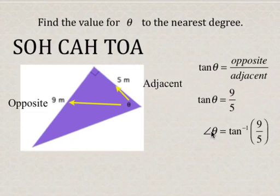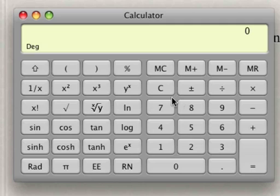And to find the measure of angle theta, what we're going to do is take the inverse tan of 9 over 5. So for this again, we'll use brackets. So we're going to go 9, bracket 9 divided by 5, close the bracket.